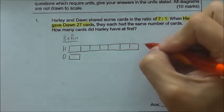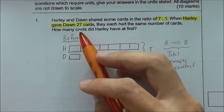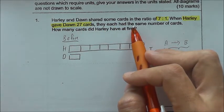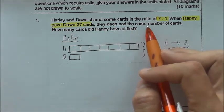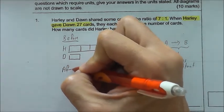So if you look at this, they are altogether 8 units. So after Harley gave Dawn 27 cards, they had the same number of units. They had the same number of cards each. So I can draw the after model.